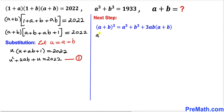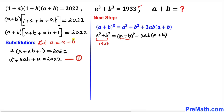Therefore we can write a³ + b³ = (a+b)³ − 3ab(a+b). We know a³+b³ = 1933, and substituting u for a+b, this becomes 1933 = u³ − 3ab·u.